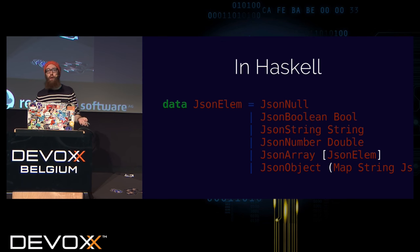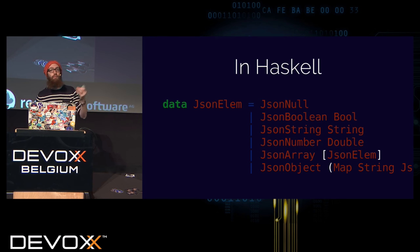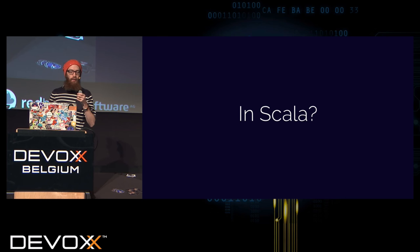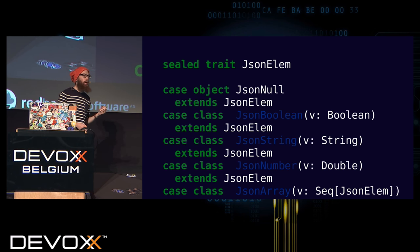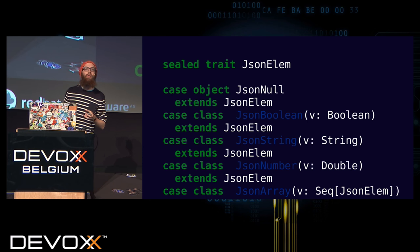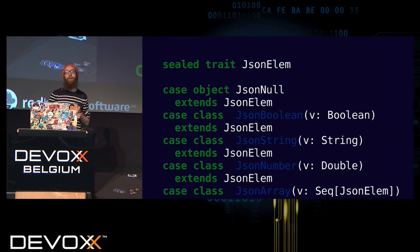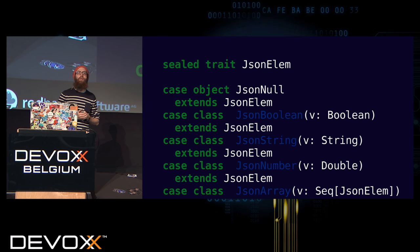In Haskell you have direct support in the language, so you just say it like it is. In Scala you don't have direct syntactic support for it, but the object model is sufficiently advanced to let us encode it properly. We use something called a sealed trait. A sealed trait is a trait that you cannot extend from outside the file in which it is defined.